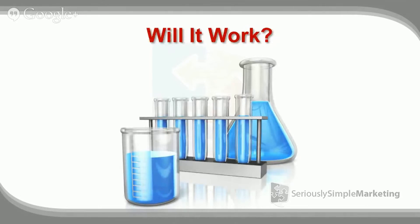The final thing to think about is testing. There's no way to know if an offer will absolutely work — you can only calculate probabilities. You start by guessing, but once it passes initial checks you put it out to the market and see what the market says. The market's opinion is what matters. Your opinion, your friends' opinion, your spouse's opinion — none of that matters. The market is the one who gives you the email, the money, or takes the action. Always make your best guess, then test it as soon as you possibly can.